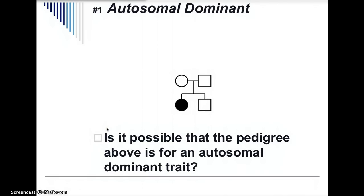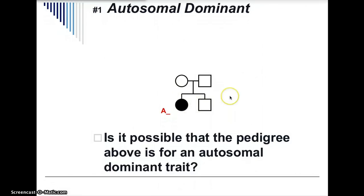Now we're going to look at our first pedigree. Is it possible that the pedigree above is for an autosomal dominant trait? Both parents are unaffected, as shown because they're not shaded in, and one child has the trait while one does not. If the trait was autosomal dominant, this child would have to have at least one dominant allele, while the rest of the family could only have recessive alleles. Two parents that are homozygous recessive cannot have a child with a dominant allele. So our answer is no — it's not possible that this is for an autosomal dominant trait.